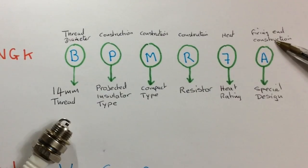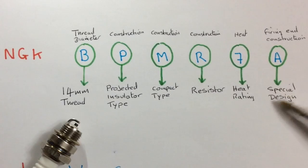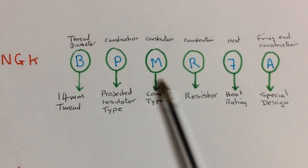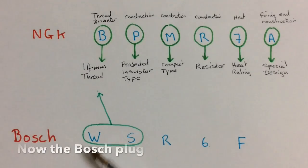A basically means that the firing end construction, that's the whole firing end construction there, is a special design. So we can see why the BPMR7A is a good plug for the TS350. First of all, if we look at these first two letters,